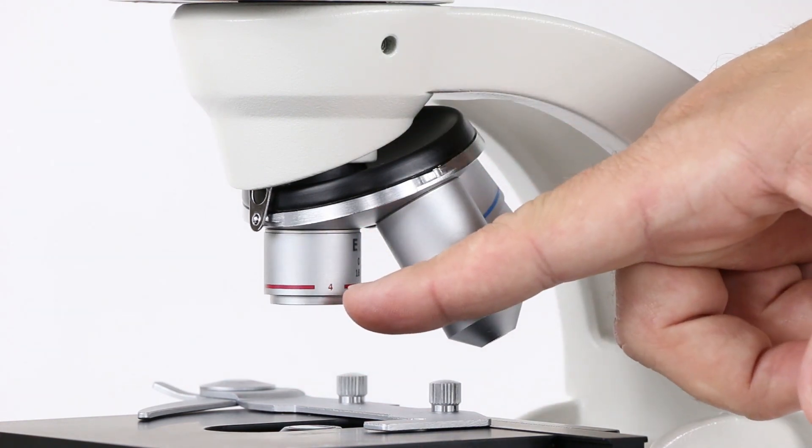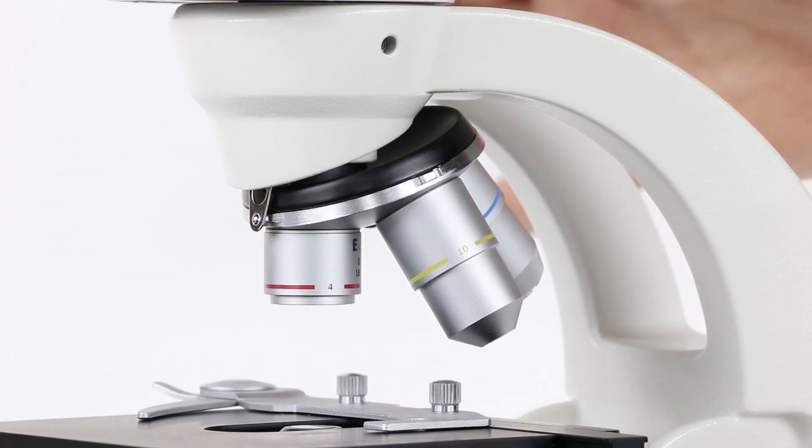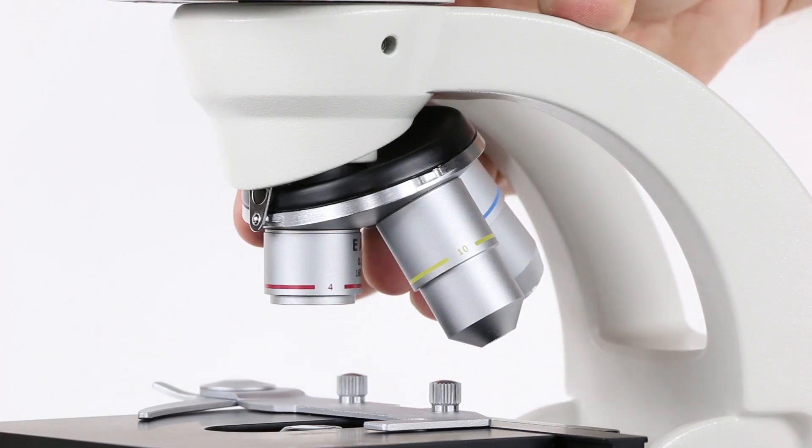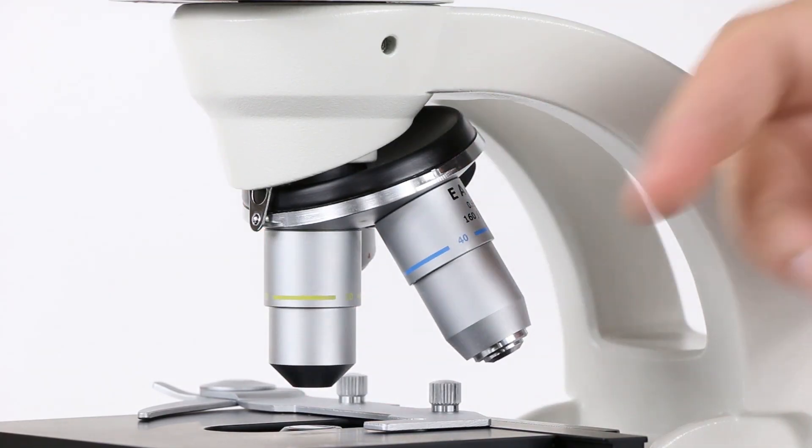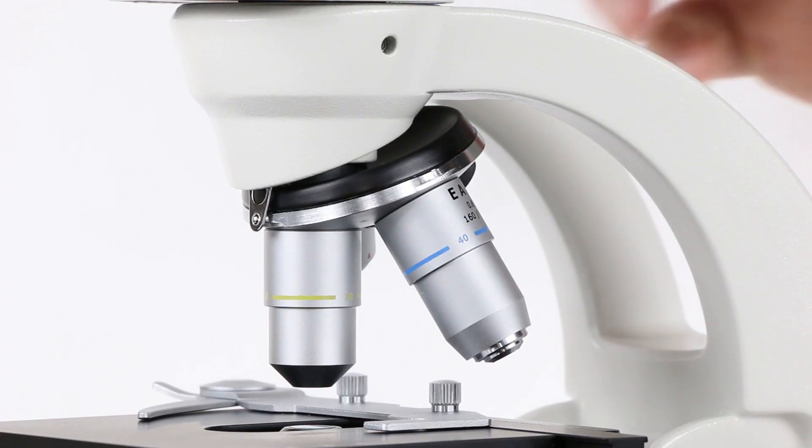The first lens here is called the scanning lens, and it has a magnification of 4x. Turn it to the next one, that's the low power lens, and it has a magnification of 10x.